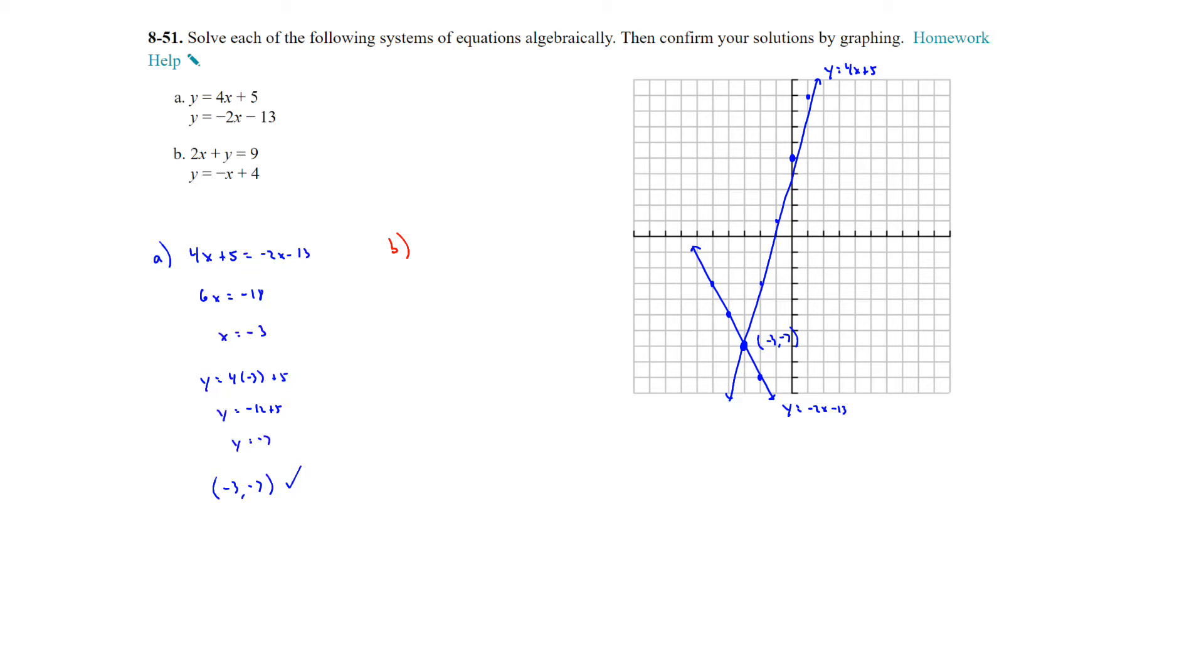Alright, and b we're going to use substitution because y is equal to negative x plus 4. So we can plug that in to the y value. And solve for x. This would be x plus 4 equals 9. Subtract the 4. We get x equals 5. Plug 5 back in. y equals negative 5 plus 4. And y is equal to negative 1. So the solution is 5, negative 1.